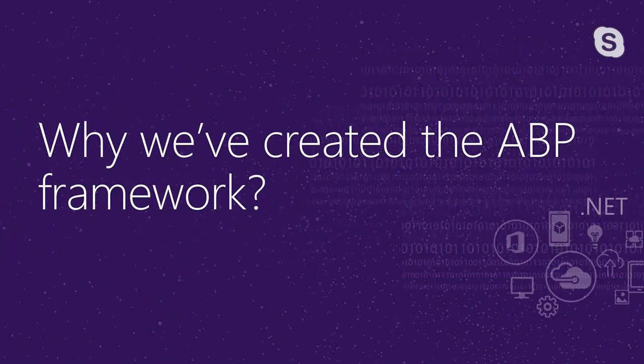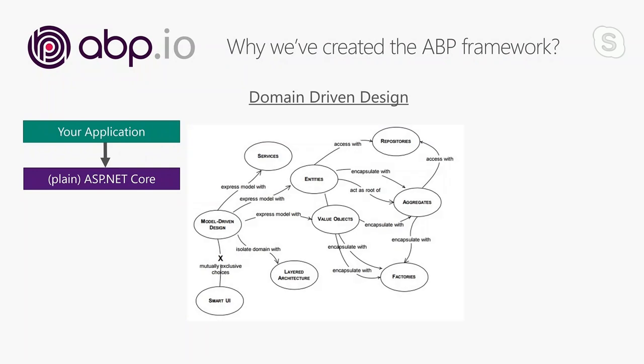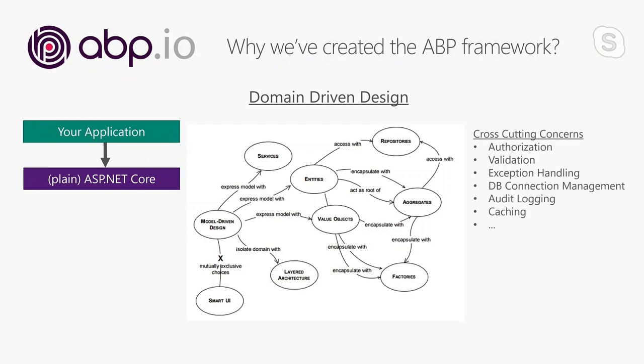First, we should understand why we need such a project and why we created it. If you are building applications on top of plain ASP.NET Core, you mostly find yourself repeating the same infrastructure again and again. You need to decide on an architecture — say, a layered architecture based on domain-driven design or clean architecture principles. You'll write action filters or interceptors to automate cross-cutting concerns like authorization, validation, exception handling, database transaction management, audit logging, caching, and so on. You definitely don't want to repeat this logic in every service method.